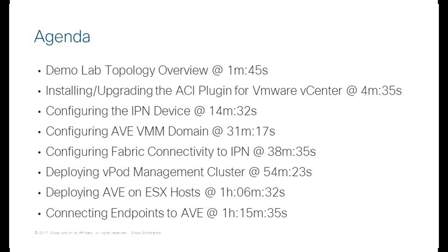We'll also have to configure the IPN device. This is a step that is a little above and beyond what ACI will control — the IPN configuration is a separately managed device outside the scope of ACI. Next, we'll configure the AVE domain that will be used for the vPod. This can also be done during the vPod deployment, but we recommend pre-creating the AV domain to take advantage of all the configuration options available.